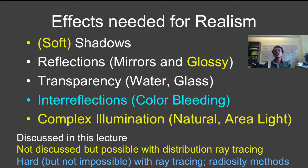The yellow parts, which is soft shadows from area light sources, glossy reflections, complex illumination from natural and area lights, are not present in the standard recursive ray tracing algorithm or what you'll implement for homework 3. However, they are possible with simple extensions to distribution ray tracing.